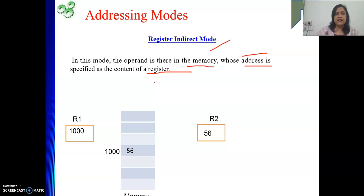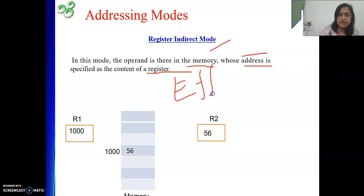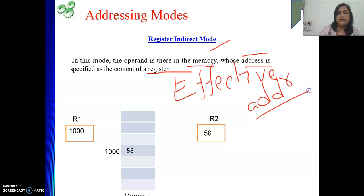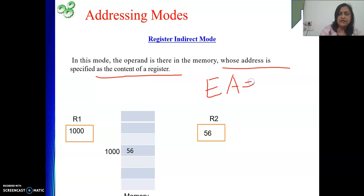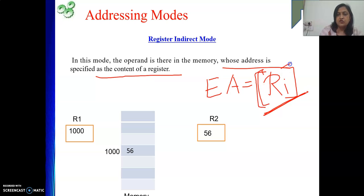One more term when we discuss addressing modes is called effective address. Whenever we are doing addressing mode, we need to find out the effective address of our operand. The meaning of effective address is: the address of the operand is called the effective address. In this scenario, our data will be there in memory whose address is there in a register. So your effective address will be the content of a general purpose register — written as [Ri]. Ri means any general purpose register, and square bracket means content. So content of any general purpose register will be the address of your operand in register indirect mode.